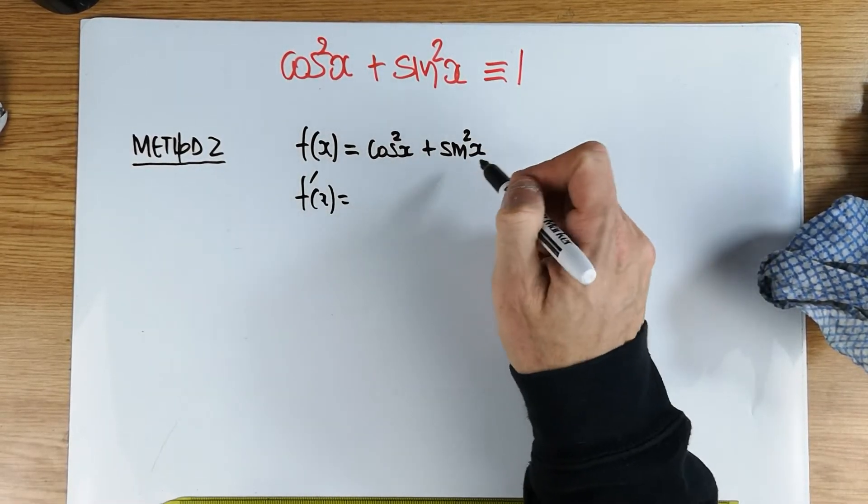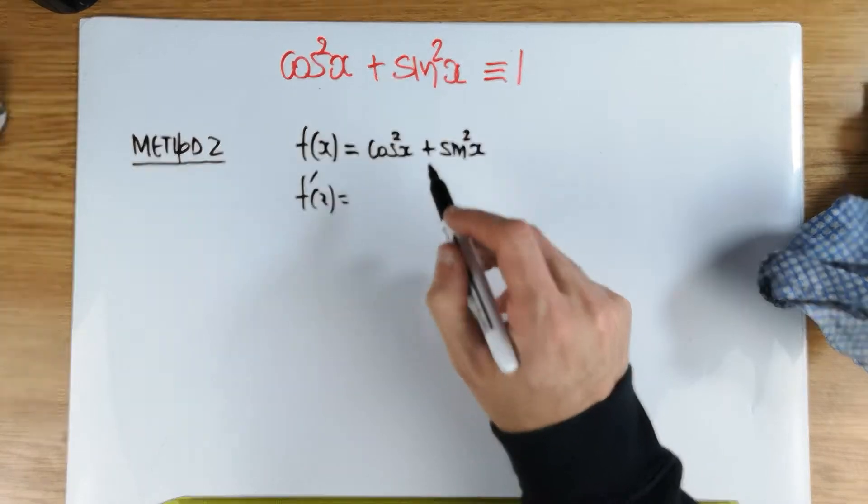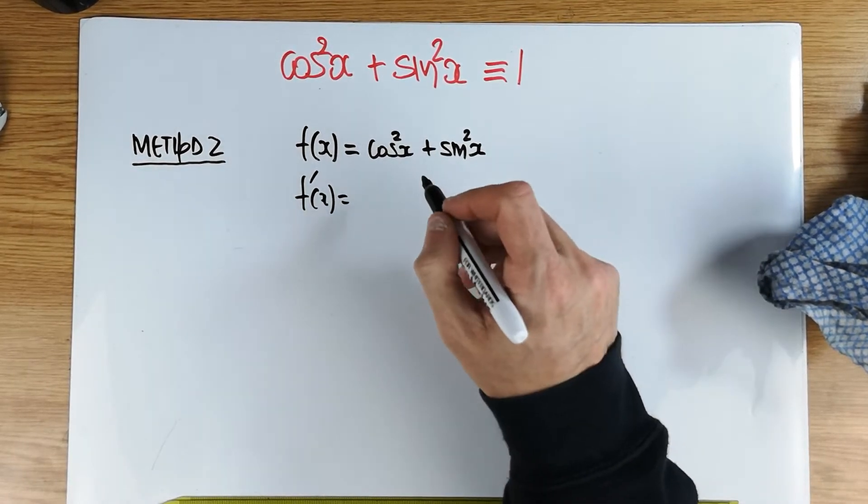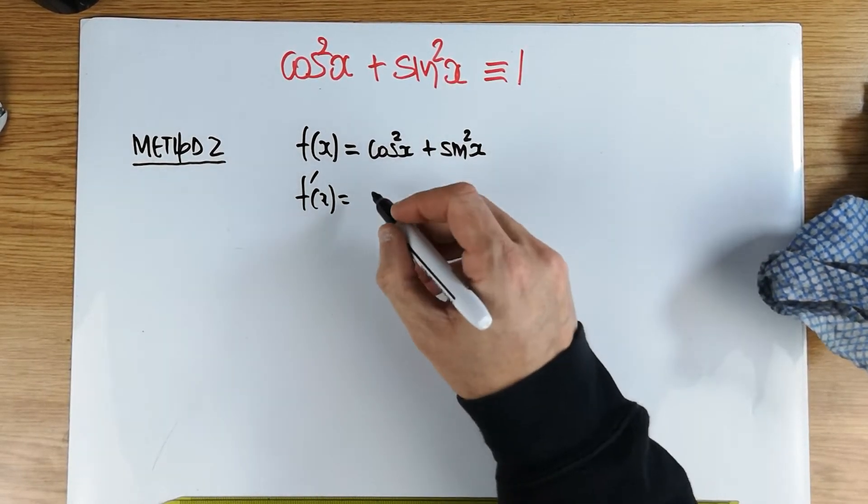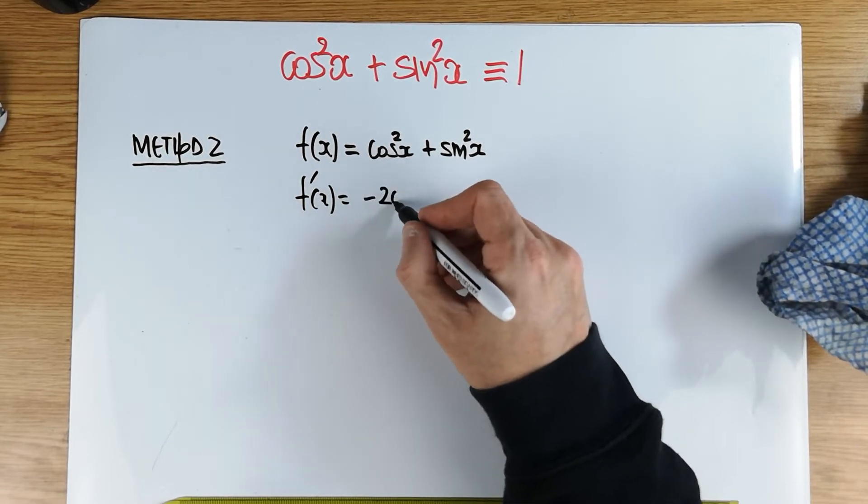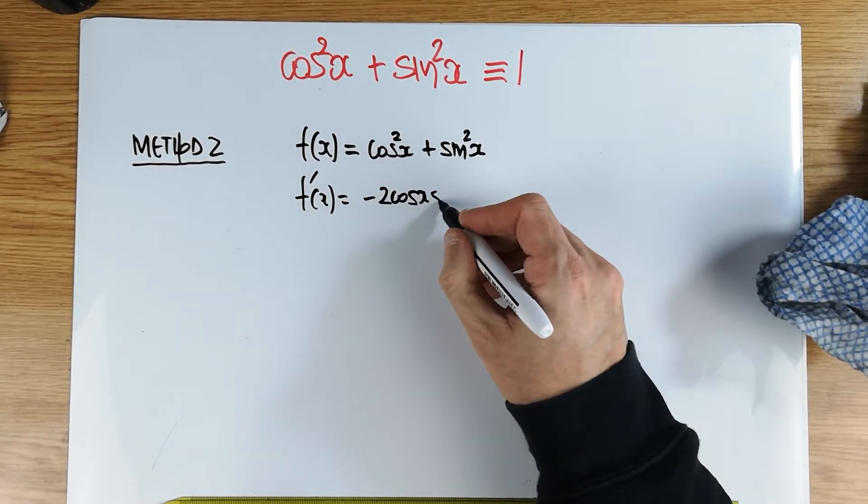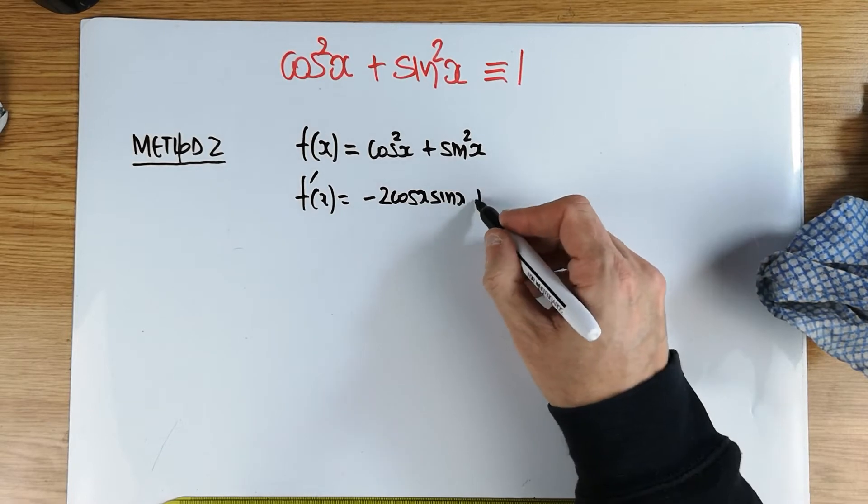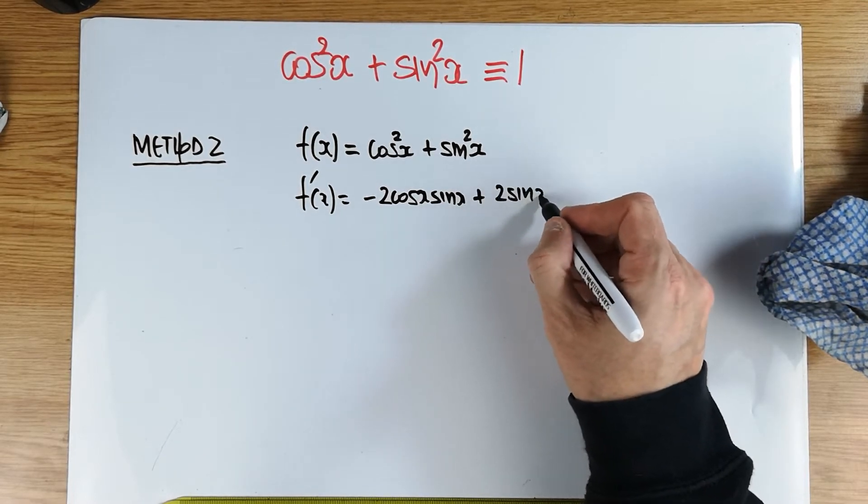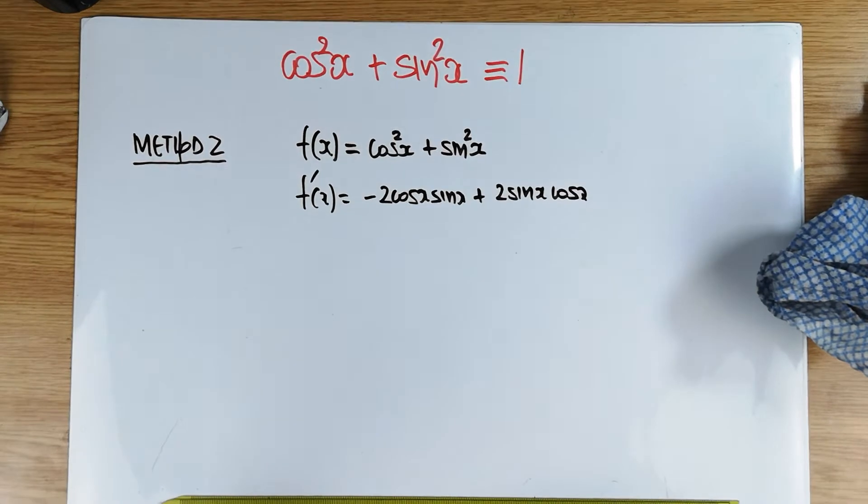And now I'm not going to be showing a lot of workings. Anybody who will be able to follow this is differentiation and other skills must be tip top. Therefore, this will differentiate to minus 2 cos x sin x plus 2 sin x cos x. So that's, I just merely differentiated this line.